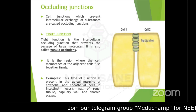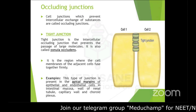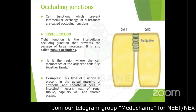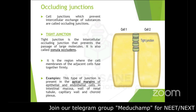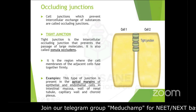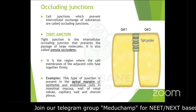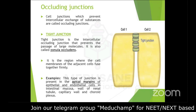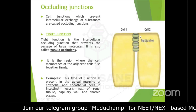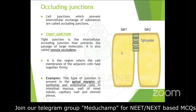One type of occluding junction is the tight junction — this frequently comes as an MCQ. Tight junction is the intercellular occluding junction that prevents the passage of large molecules. Tight junction is also called zonula occludens. Cell junction is also called membrane junction.